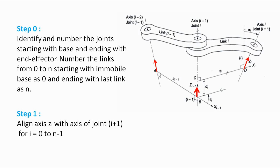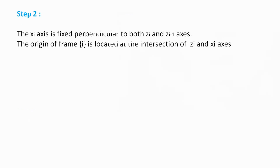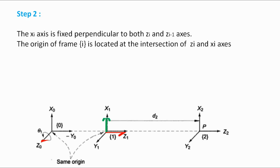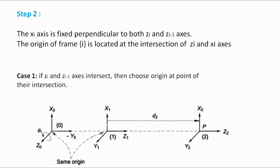In step 2, we fix the xi axis and origin. The xi axis is fixed perpendicular to both zi and zi-1 as shown in the diagram. x1 is perpendicular to z0 and z1, and the origin is located at the intersection of the zi and xi axes. Here we have three possible cases. Case 1: when zi and zi-1 intersect — as shown, z1 and z0 are intersecting. In this case, choose the origin at the point of their intersection.